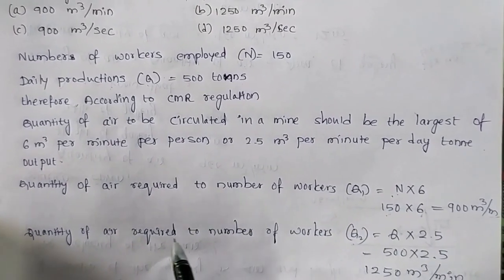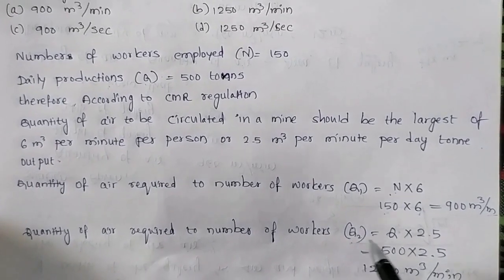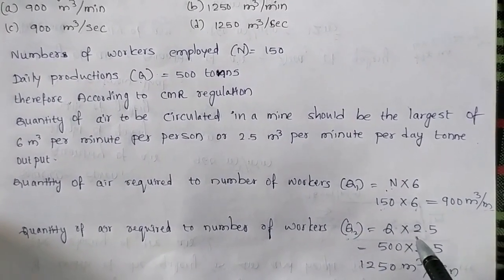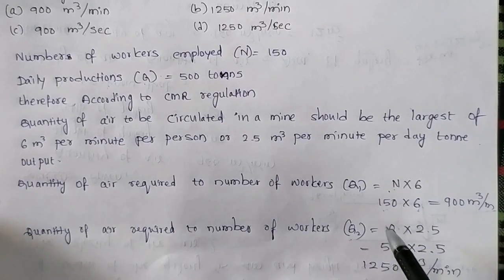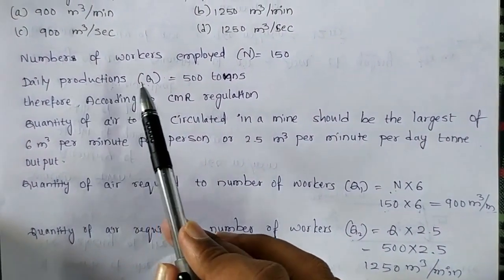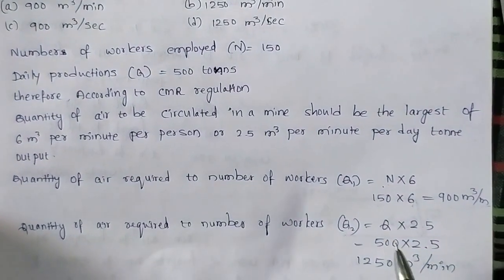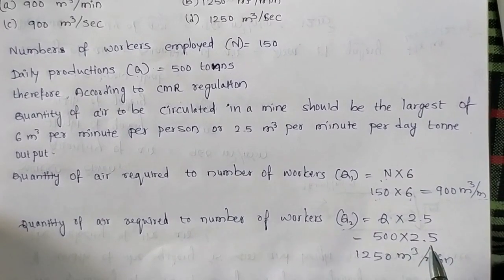Next, the quantity of air required to number of workers be Q2. So Q is multiplied with 2.5. Q is nothing but the daily production. Daily production is 500 tons. So this 500 tons is multiplied with 2.5.